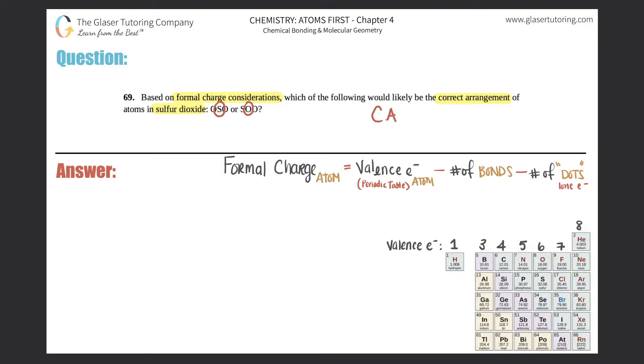The central atom is always the least electronegative atom. There's exceptions - hydrogen cannot be in the middle. But in general, the central atom is the least electronegative.